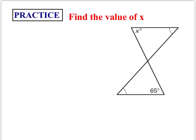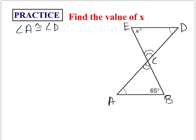Now let's practice finding the value of X. First, let me name these angles for reference. We know angle A is congruent to angle D. We also know that angles BCA and DCE are congruent to one another — those are the angles formed at point C.